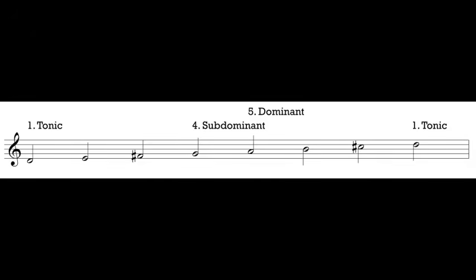If we go down 5 notes from our high tonic — D, C sharp, B, A to G — we get to what we call the subdominant, scale degree 4. Up 5 notes from the tonic is scale degree 5, the dominant, and down 5 is scale degree 4, the subdominant. Halfway between 1 and 5 is scale degree 3, which we call the mediant — it's in the middle between 1 and 5. Counting up from the tonic: D, E, F sharp — that's scale degree 3, the mediant.